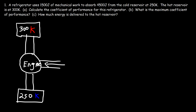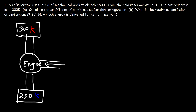In a heat engine, heat flows from hot to cold and mechanical work is done by the engine in that process. In this example, we're using 1,500 joules of mechanical work and absorbing 4,500 joules from the cold reservoir. So we have W and also QC.